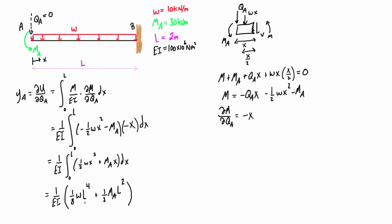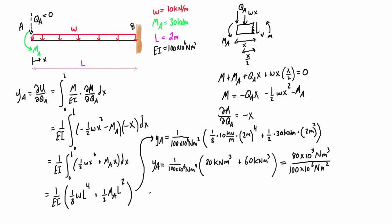We have values for W, MA, L and EI, so let's plug those in. And then if we do that final simplification we're going to find that YA is equal to 0.0008 meters, and we can just convert that to be 0.8 millimeters.